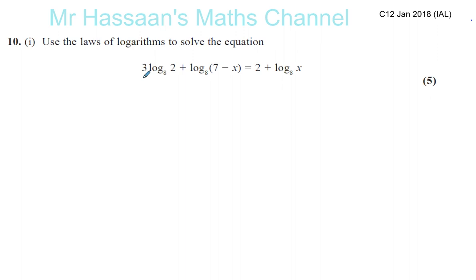What we see here is we have 3 log base 8 of 2 plus log base 8 of (7-x) equals 2 plus log base 8 of x. When we want to solve an equation like this, we want to bring all of the log terms together on one side of the equation - everything that says log, especially if they're the same base like this. What I'm going to do first is I'm going to use the power law, so I'll say log base 8 of 2 cubed, plus log base 8 of (7-x), and I'm going to subtract this log base 8 of x, and on that side I've got 2.